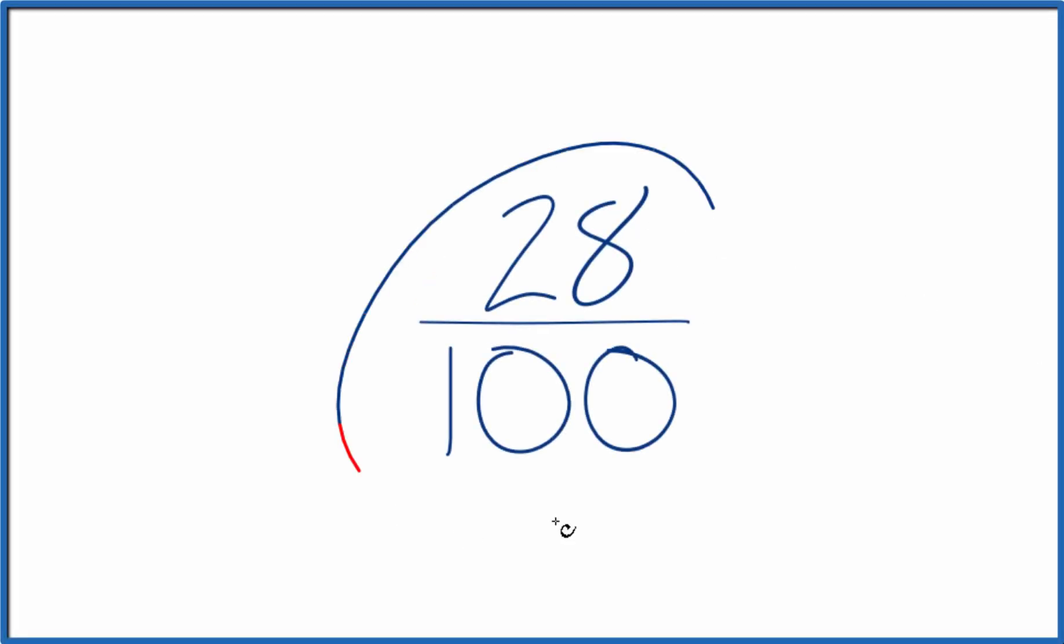Let's simplify the fraction 28 over 100, and here's how we do it. What we're trying to do is find another fraction that's equivalent to 28 divided by 100, has the same decimal value, just that we've simplified or reduced it down to lowest terms.